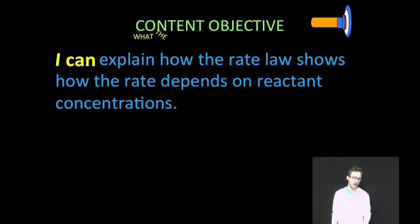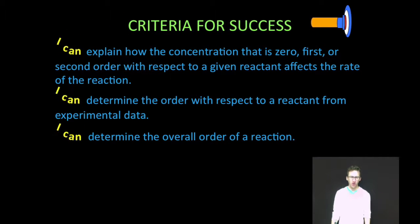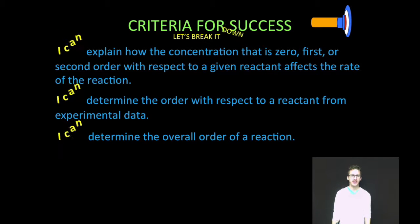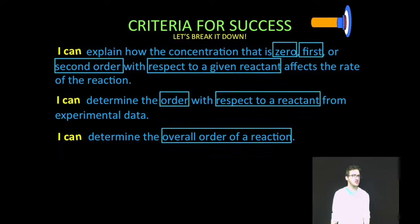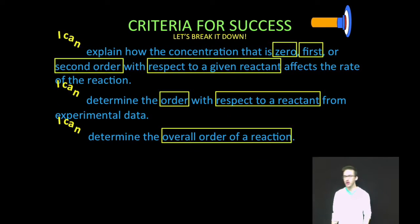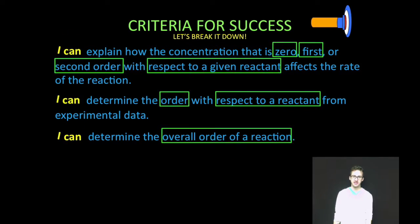Hey, what's up, chem peeps? It is Mr. Boylan, back for another thrilling vid. In this vid, we are going to explain how the rate law shows how the rate depends on reactant concentrations. Breaking it down, as always. First, we're going to explain how a concentration that is zero, first, or second order with respect to a given reactant affects the rate of the reaction. Number two, determine the order with respect to a reactant from experimental data. And number three, determine the overall order of a reaction.